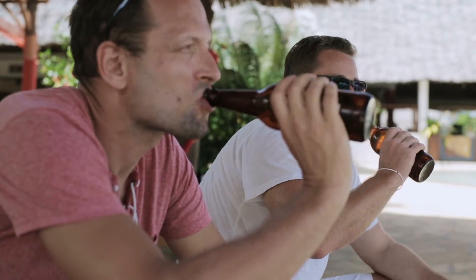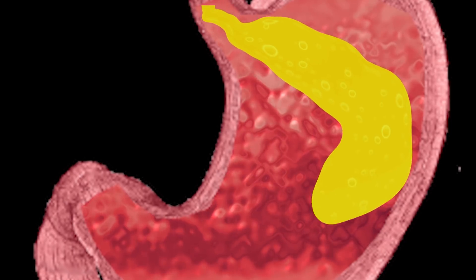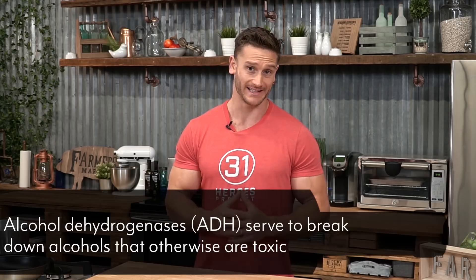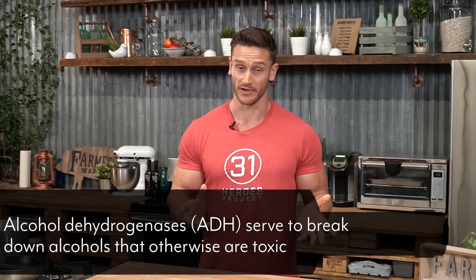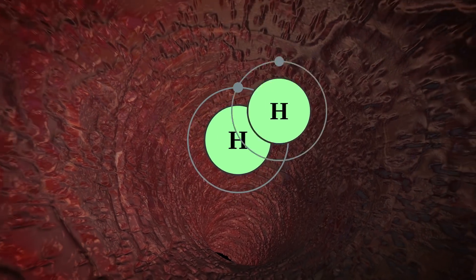As soon as you consume alcohol, it begins being broken down in your body through something known as alcohol dehydrogenase. Just like the name implies, it takes away hydrogen atoms, breaking apart the hydrogens. It does this as soon as it hits the mouth, and as soon as the alcohol hits the stomach.